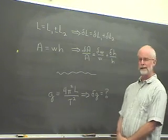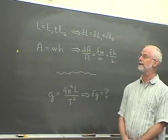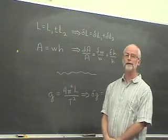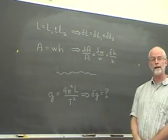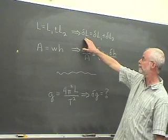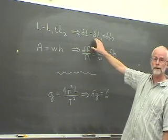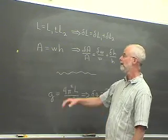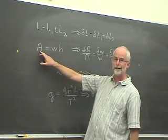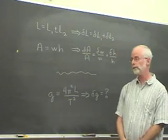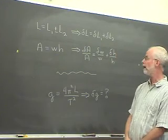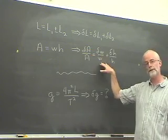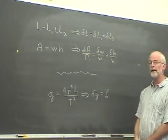In the last video we looked at two examples of the propagation of uncertainties. A composite length was formed from the sum or the difference of two individual lengths, and we calculated the uncertainty in that length to be, in both cases, the sum of the individual uncertainties in L1 and L2. We also looked at the calculation of the area of a rectangle, which is the product of its width and its height, and in that case we found that the fractional uncertainty in the area is equal to the sum of the fractional uncertainties in W and H.